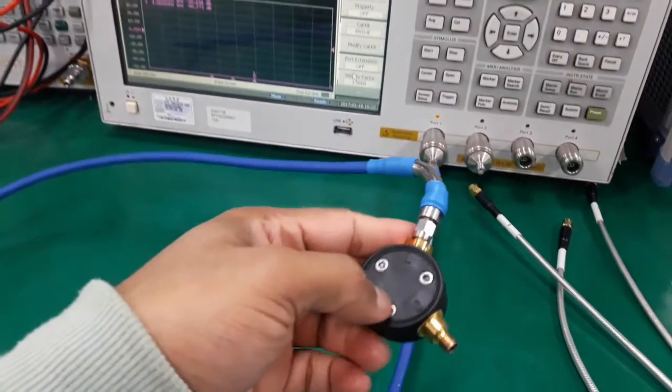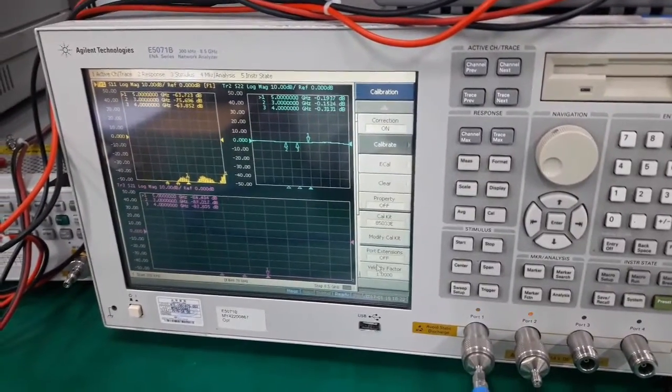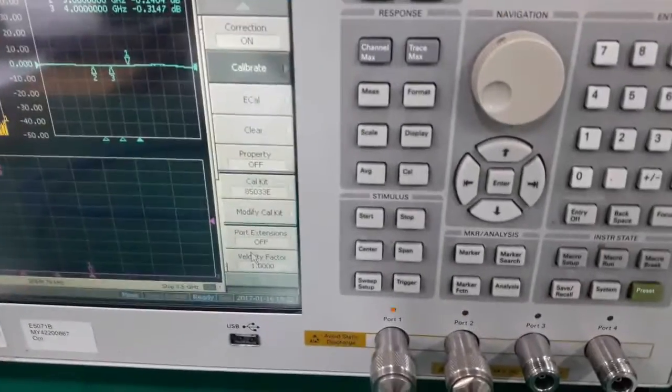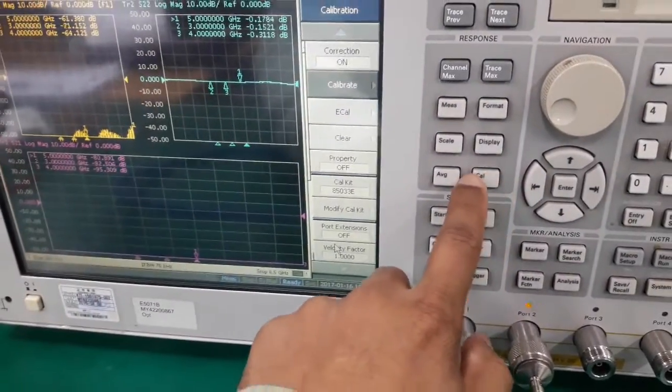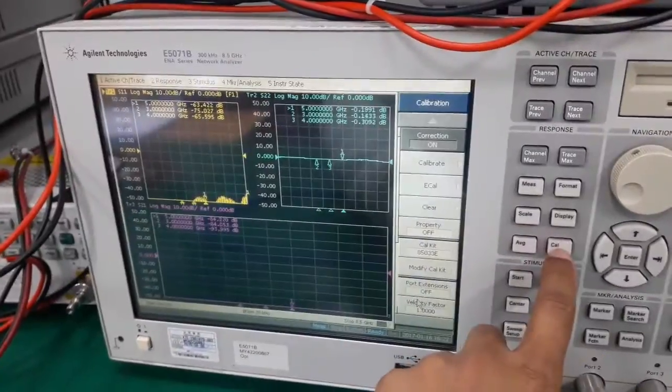Alright. I connected the port 1 of network analyzer to the L-terminal of the calibration kit. And then you have to press this button, cal. Cal stands for calibration.